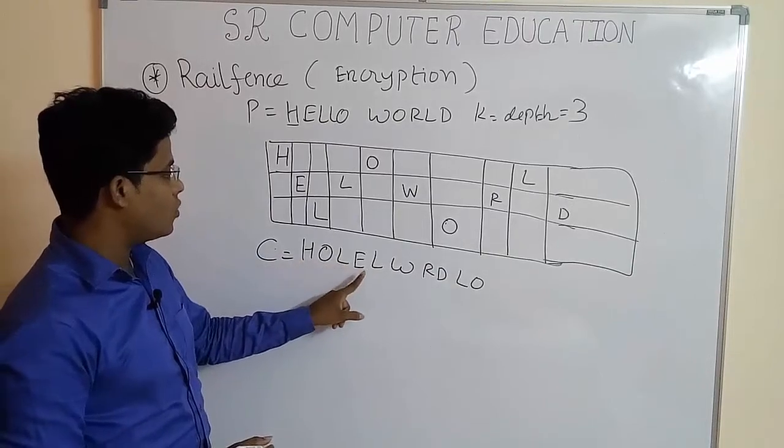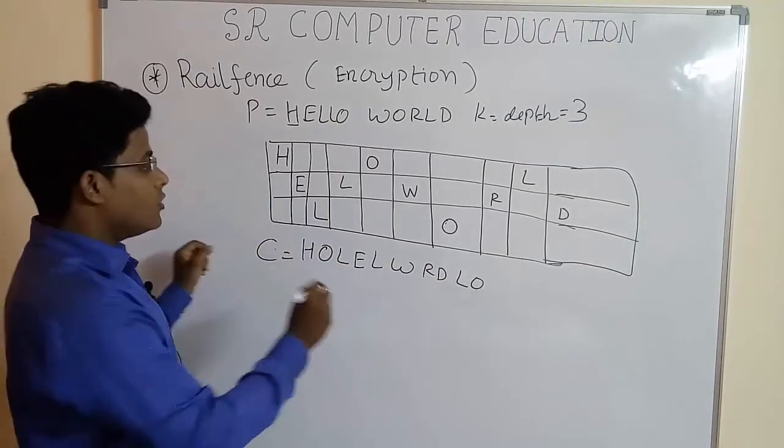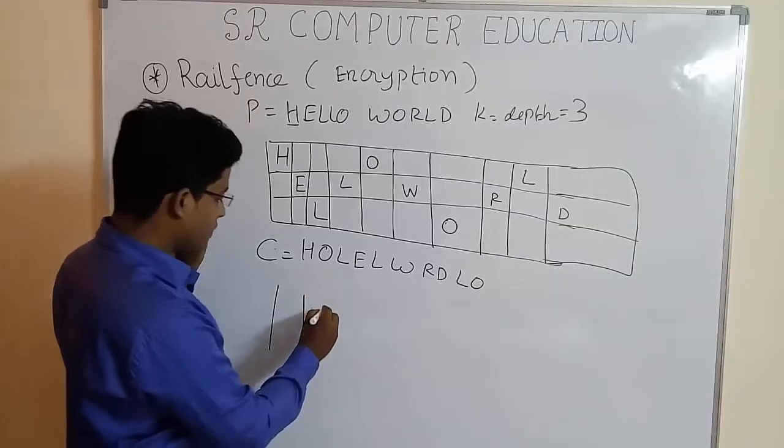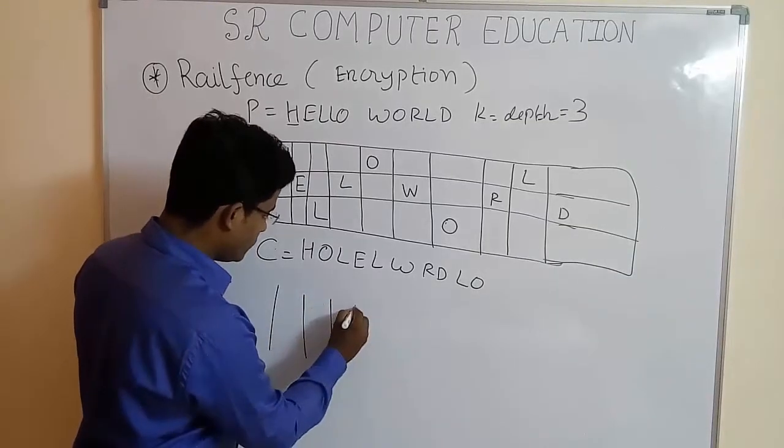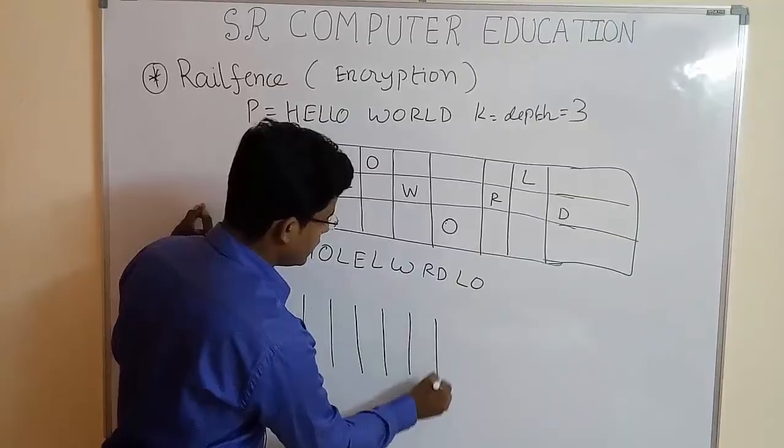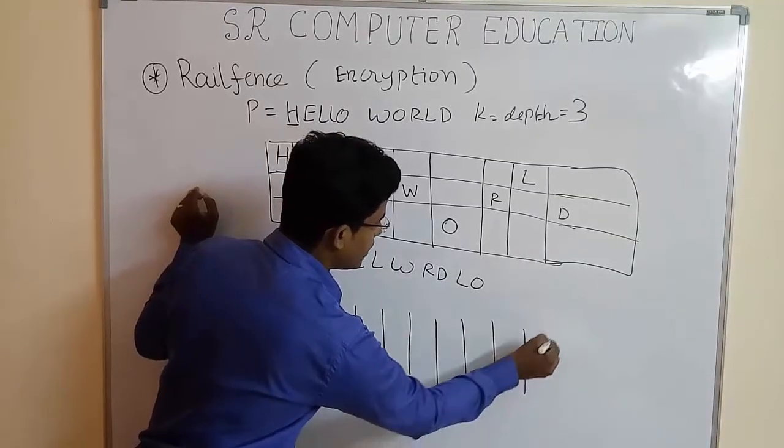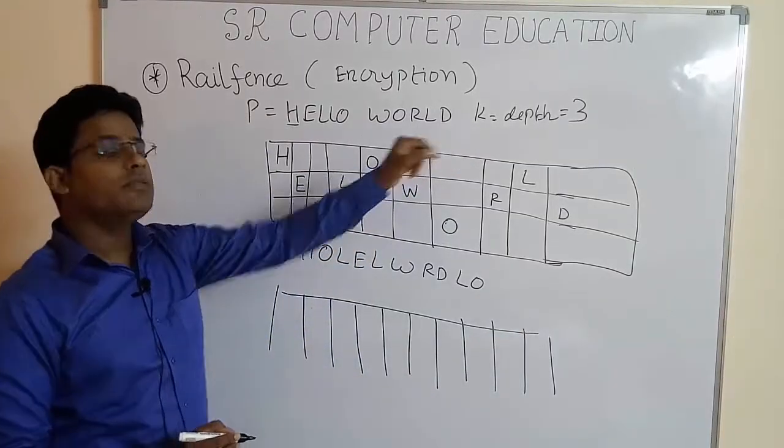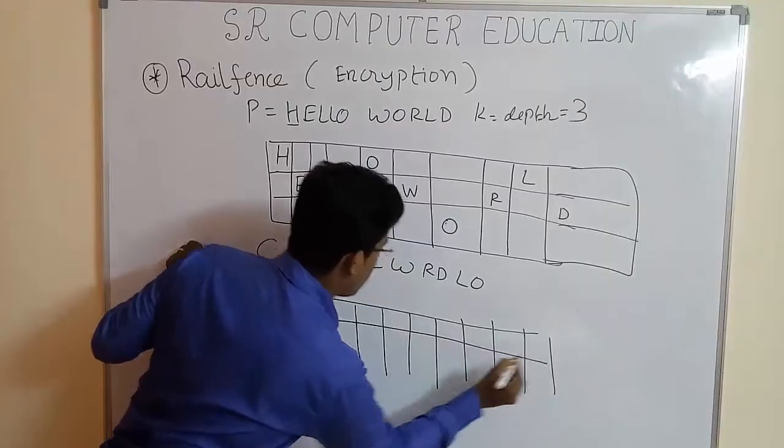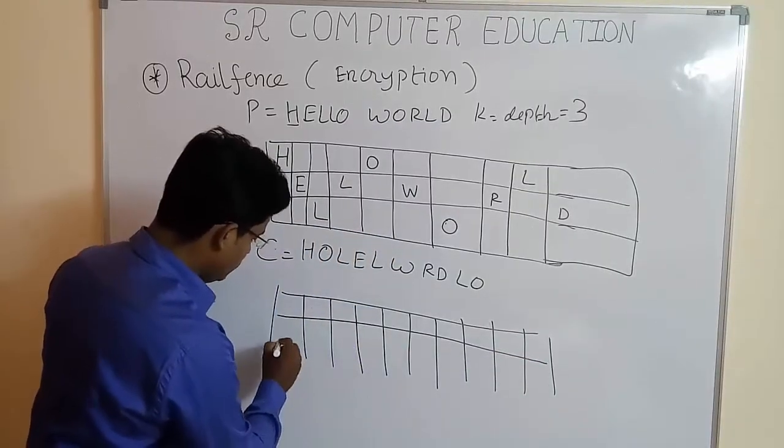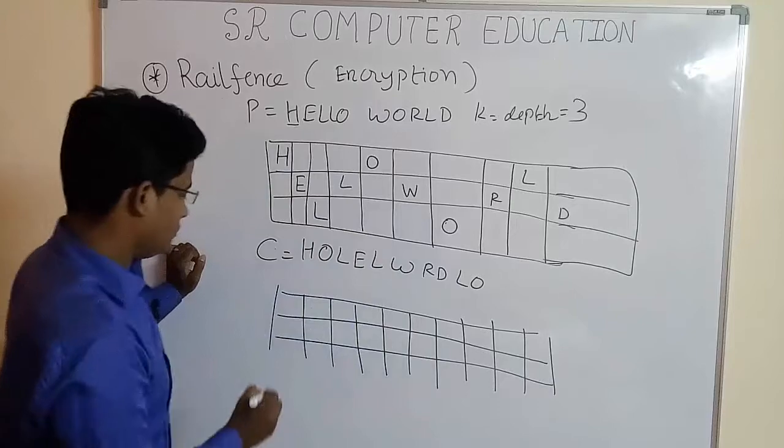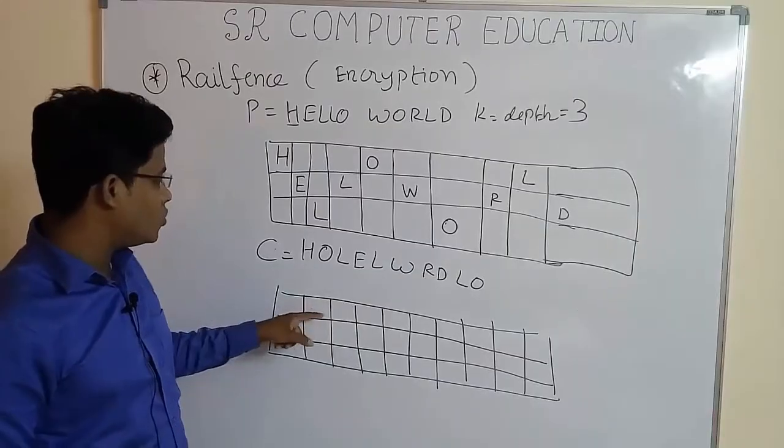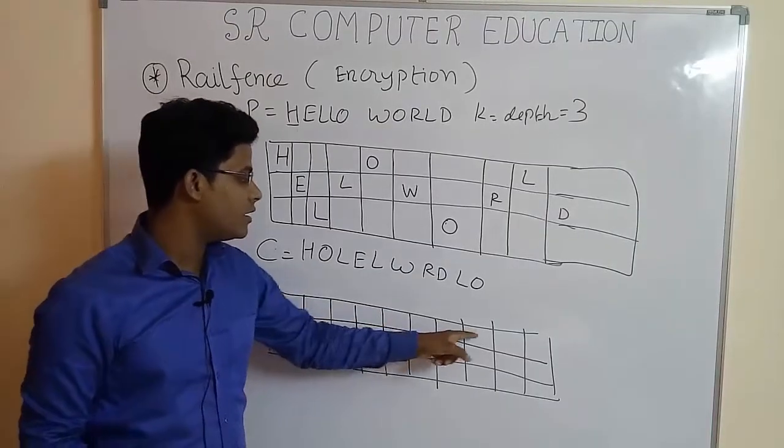1, 2, 3, 4, 5, 6, 7, 8, 9, 10. Now here you have to remember depth is 3 so you have to draw 3 rows also, with 10 columns.